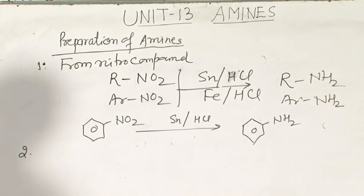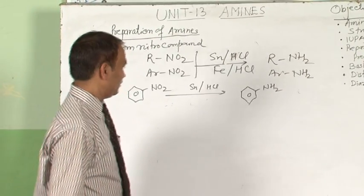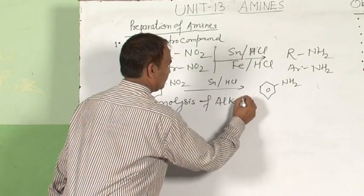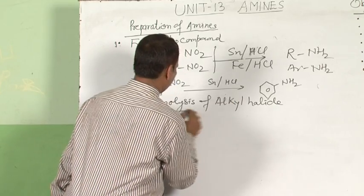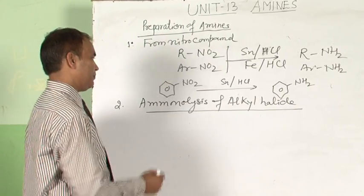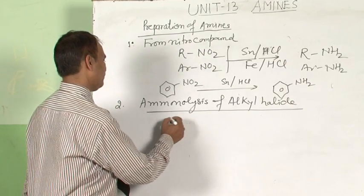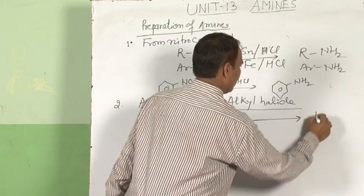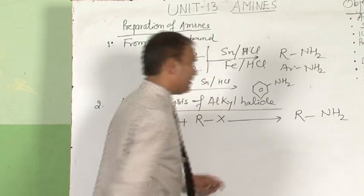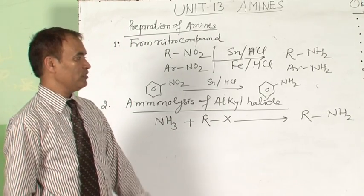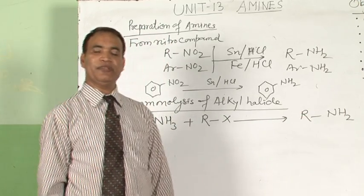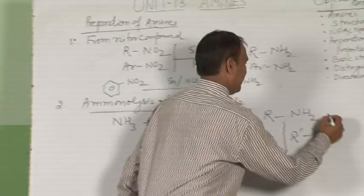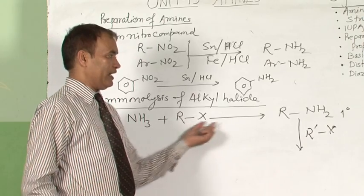The second method is from alkyl halide — ammonolysis of alkyl halide. It is a nucleophilic substitution reaction for the preparation of aliphatic amines. Ammonia reacts with alkyl halide to give RNH₂. However, the demerit of this reaction is that the reaction does not stop — it continues until substitution of all hydrogens, giving a mixture of primary, secondary, tertiary amines, and quaternary ammonium salt.